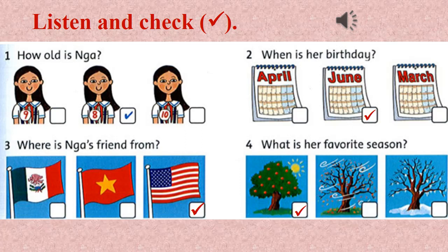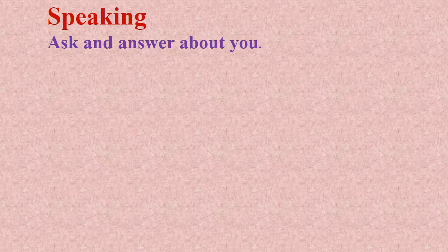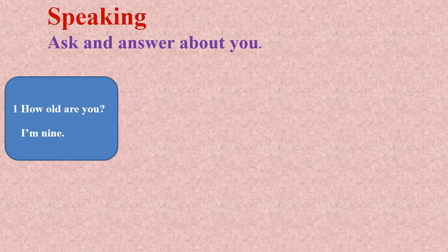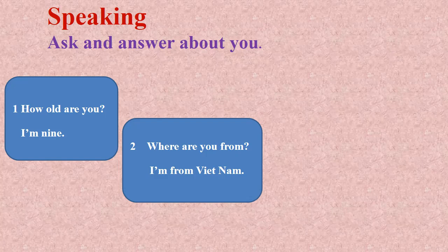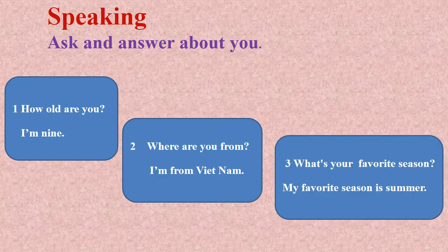Now let's move to the speaking lesson — ask and answer about yourself. First question: How old are you? I'm nine. How old are you? I'm 32. Next: Where are you from? I'm from Vietnam. I'm from Ho Chi Minh City. What is your favorite season? My favorite season is summer. You can also choose spring, summer, or fall.